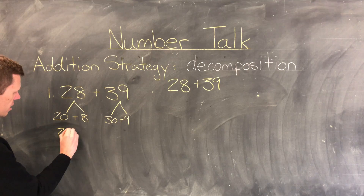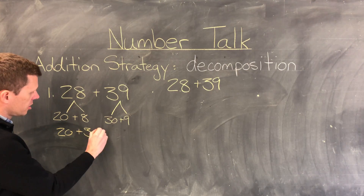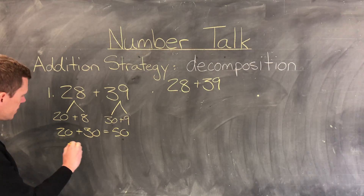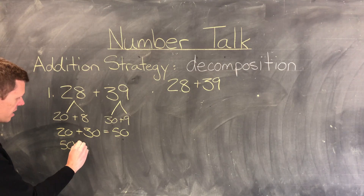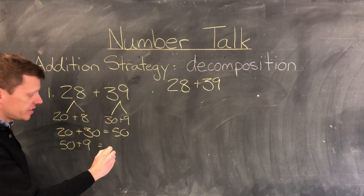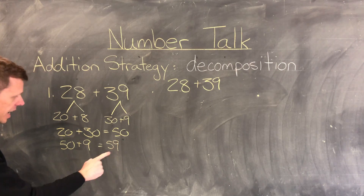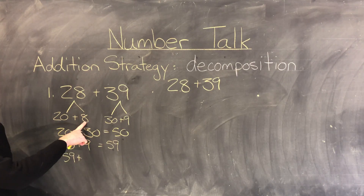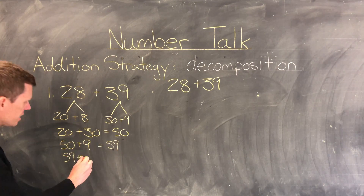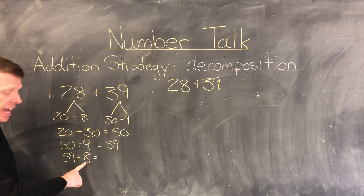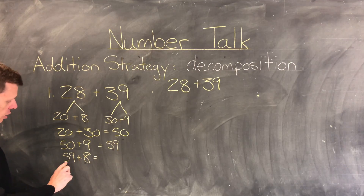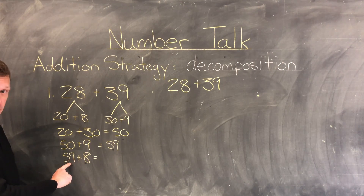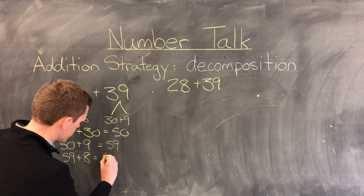Starting with 20 plus 30, that equals 50. Continuing with 50, I can then add 9 and that is 59. Now I need to add the last number, which is 8. So 59 plus 8 — I know 59 is close to 60, and 60 plus 8 would be 68, but since I have 59 plus 8 that is going to be 67.